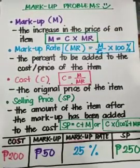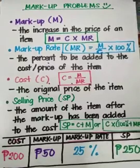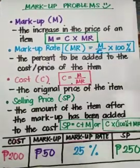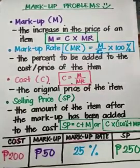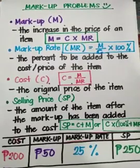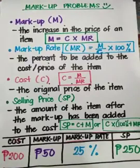So if you are a business owner or reseller, the markup is what you add on top of your goods to earn a profit. We can solve for the markup using the formula C times MR, or cost multiplied by the markup rate.